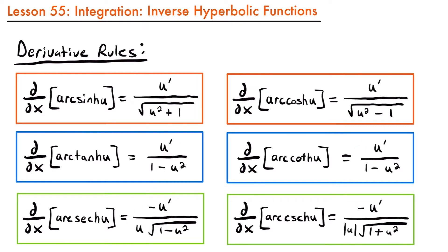Finally, look at our last pair of inverse hyperbolic secant and inverse hyperbolic cosecant, where we also have derivatives with a similar structure. For inverse hyperbolic secant we have negative u prime divided by u times the square root of 1 minus u squared, and the derivative of inverse hyperbolic cosecant is very similar except we have the absolute value of u times the square root of 1 plus u squared. Not only are the derivatives for each pair similar, but the actual definitions of these inverse hyperbolic functions also come in pairs.